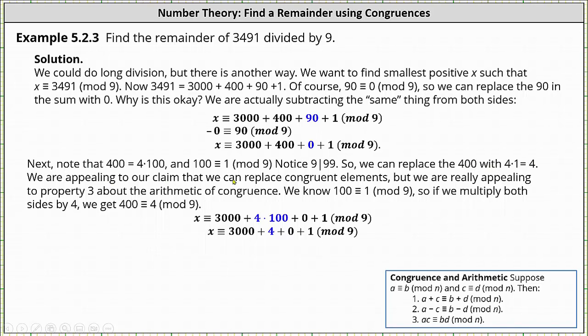We're appealing to our claim that we can replace congruent elements, but we're really appealing to property 3 about the arithmetic of congruences. If 100 ≡ 1 (mod 9), we can multiply both sides by 4 to get 400 ≡ 4 (mod 9), so we can replace 400 with 4. We now have x ≡ 3000 + 4 + 0 + 1 (mod 9).